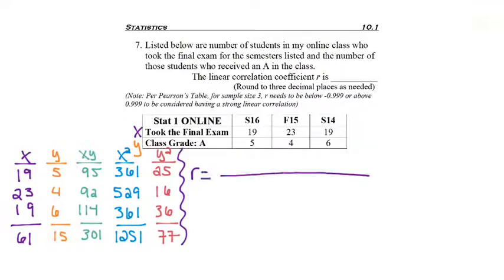I'm ready to find R. The first piece of R is N, the sample size. We have 1, 2, 3 semesters of data, so N equals 3. Now we multiply with the sum of X times Y, so we multiply with 301. Then we subtract the sum of X, which is 61, and multiply with the sum of Y, which is 15.